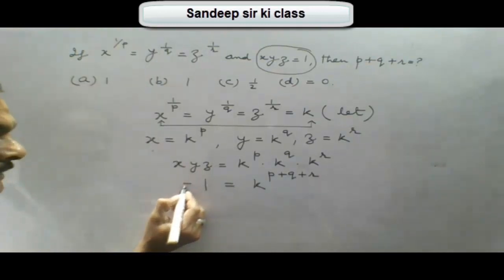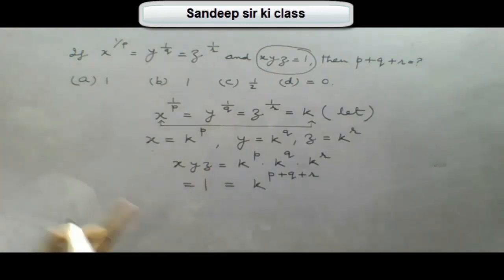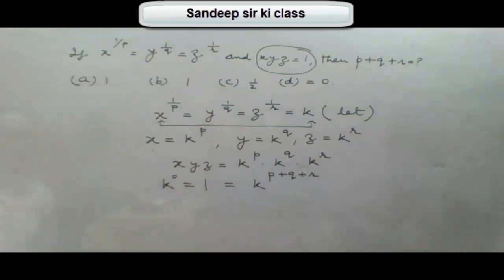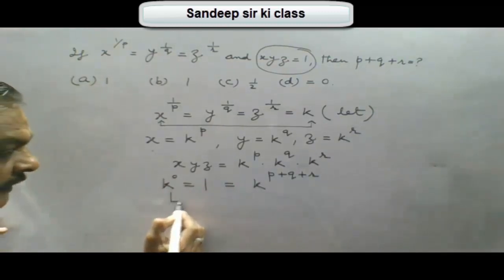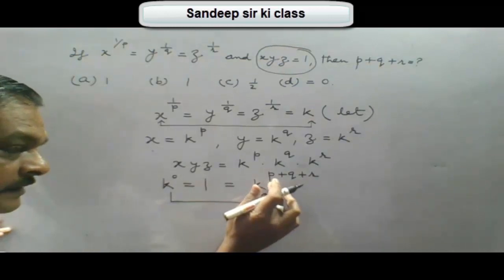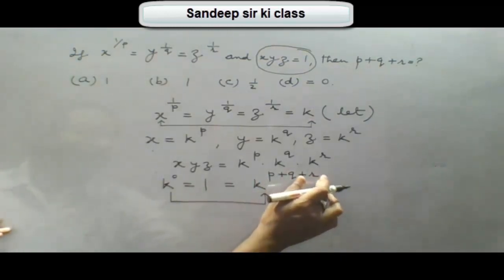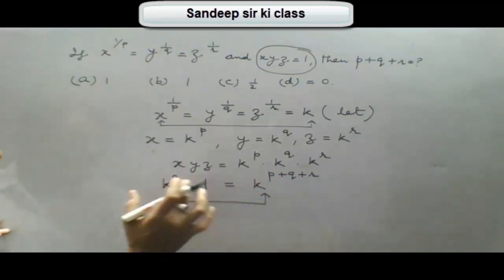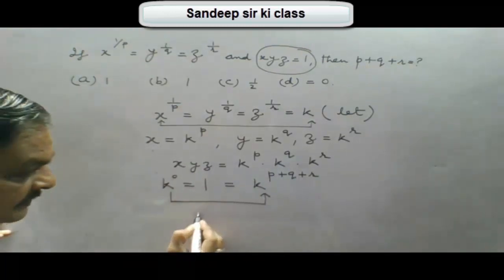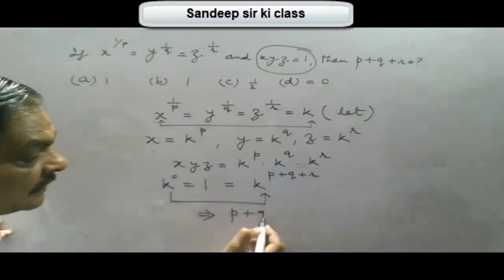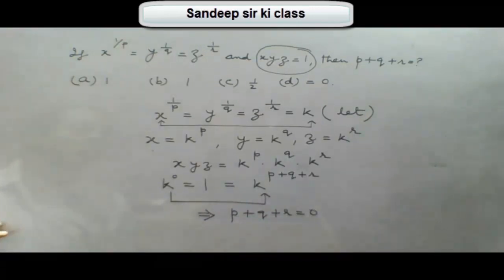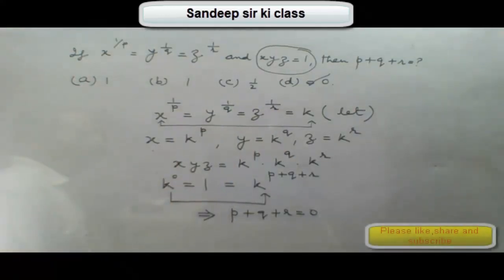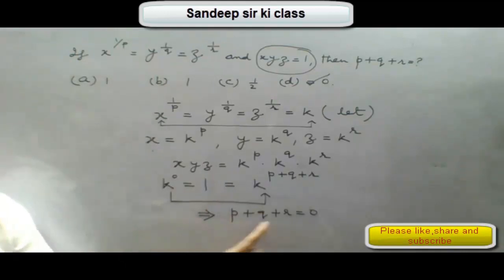We know any number raised to the power 0 is 1, so 1 can be written as k raised to the power 0. Therefore k to the power 0 equals k to the power p plus q plus r. Since the base is the same in both cases, the powers must be equal, giving us p plus q plus r equals 0. So option D is correct.